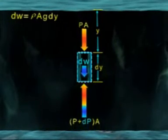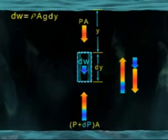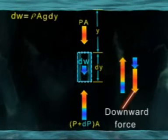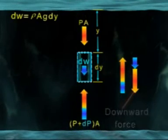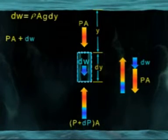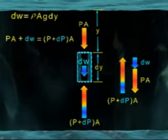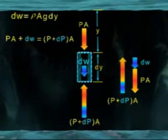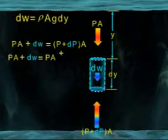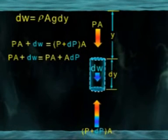Therefore, in equilibrium position, both the upward and downward forces balance each other. Thus, we have PA + dw = (P + dP)·A, which gives PA + dw = PA + A·dP.